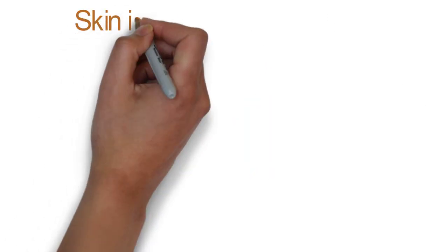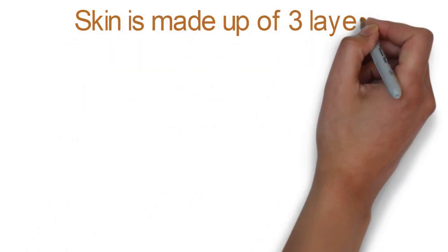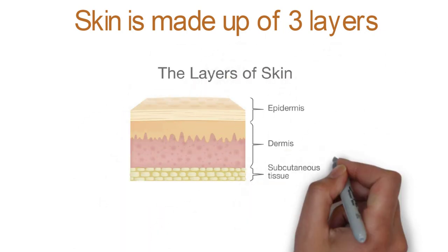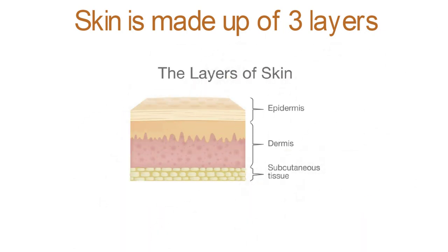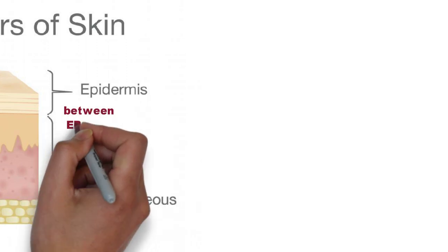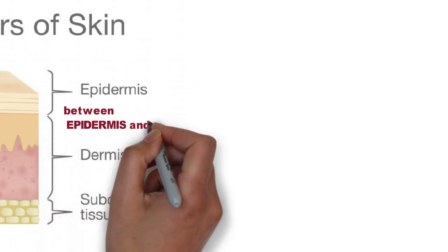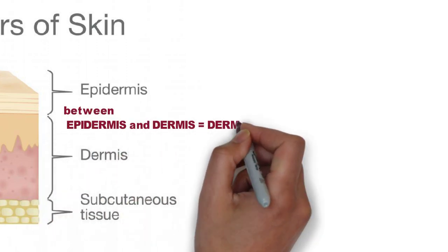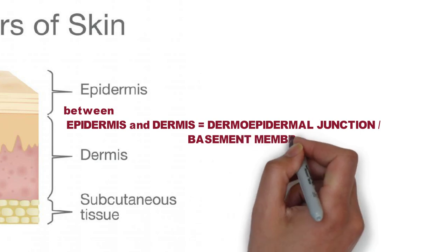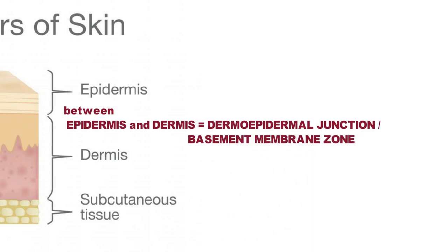Skin is made up of three layers: epidermis, dermis, and hypodermis, which is also known as the subcutaneous layer. Between the epidermis and dermis, you can see the dermoepidermal junction, which is also known as the basement membrane zone.